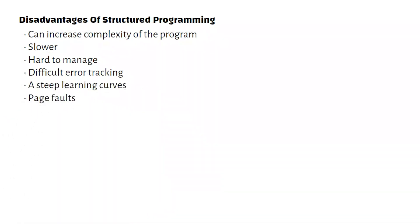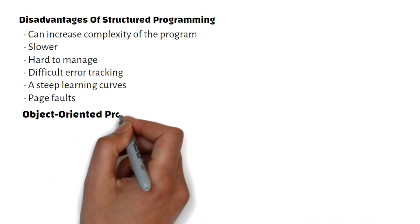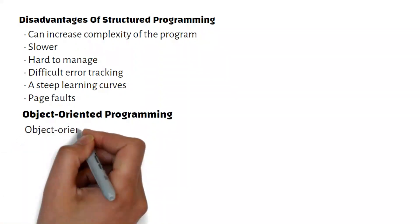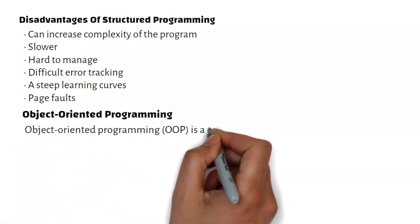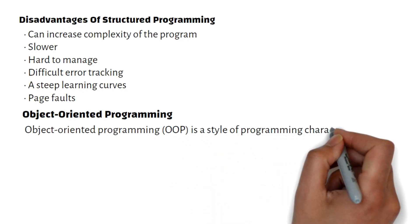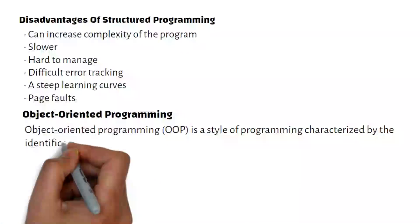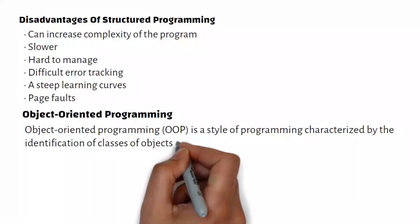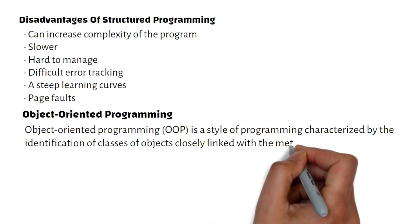Object-Oriented Programming (OOP) is a style of programming characterized by the identification of classes of objects closely linked with the methods, functions, with which they are associated.